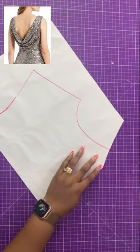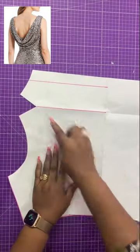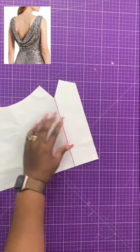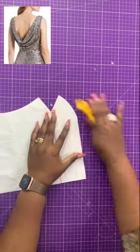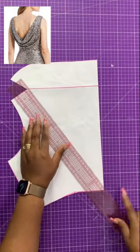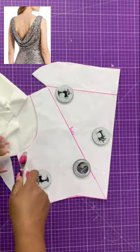Then trim off the excess paper and correct your facing line by blending it nicely with a curve like so. Be sure to cut on the bias. And voila!